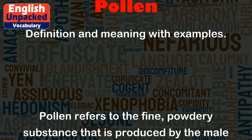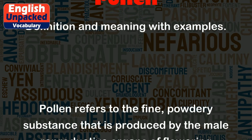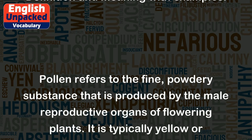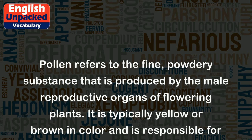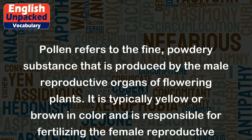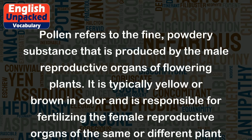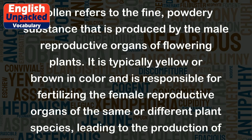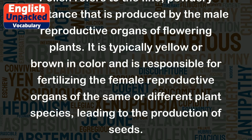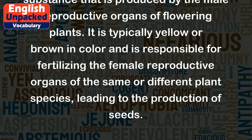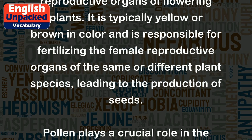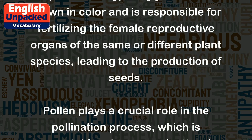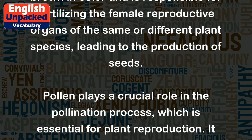Pollen refers to the fine, powdery substance that is produced by the male reproductive organs of flowering plants. It is typically yellow or brown in color and is responsible for fertilizing the female reproductive organs of the same or different plant species, leading to the production of seeds. Pollen plays a crucial role in the pollination process, which is essential for plant reproduction.